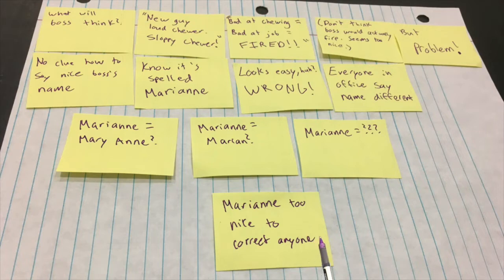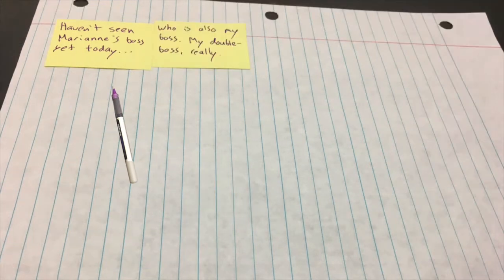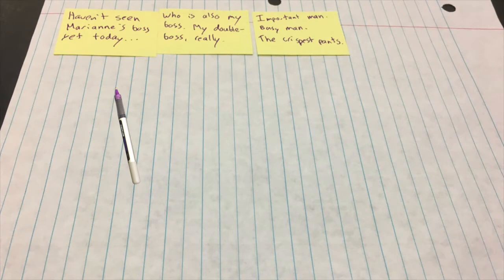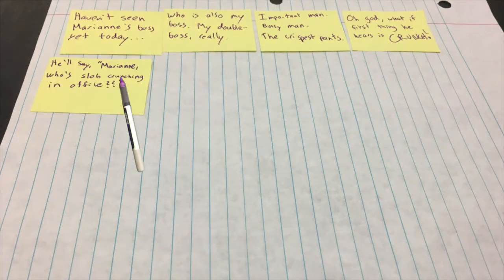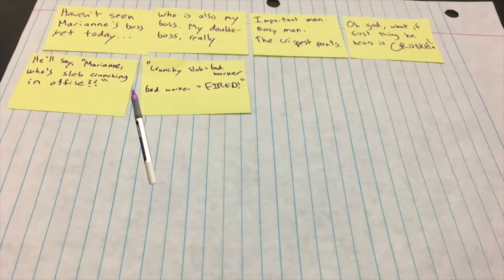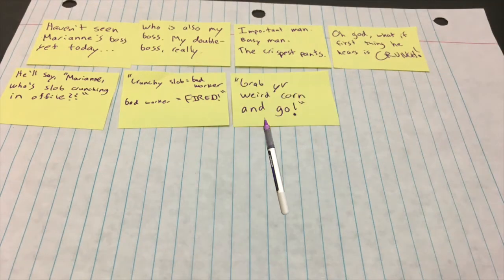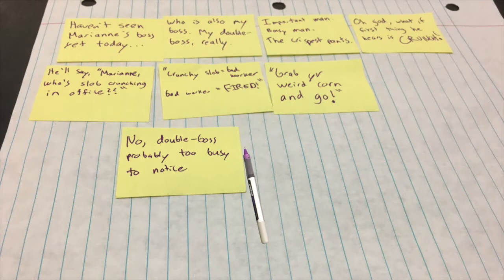Nice to correct anyone. What? Okay. Haven't seen Marianne's boss yet today. Who is also my boss. My double boss, really. Important man. Busy man. The crispiest pants. Oh god. What if the first thing he hears is crunch? He'll say, Marianne, who's slob crunching in office? Crunchy slob equals bad worker. Bad worker equals fired. Grab your weird corn and go. No, double boss. Probably too busy to notice.